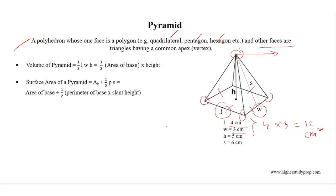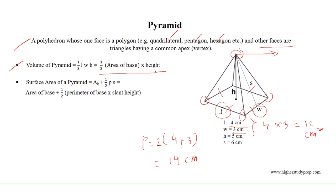As a rectangle, the perimeter of the base of the pyramid is equal to 2 times (4 plus 3), which results in 14 cm. The volume of the pyramid is equal to one third of the area of the base multiplied by the height.